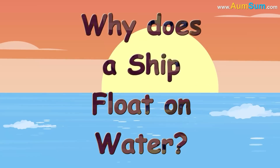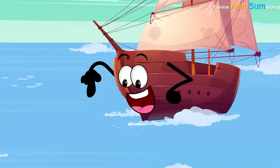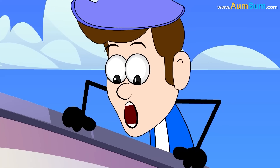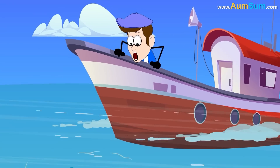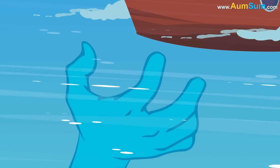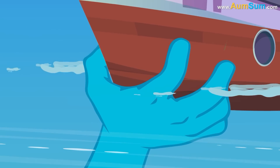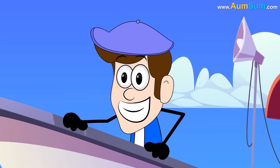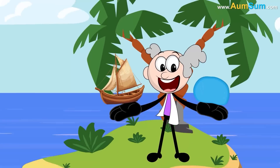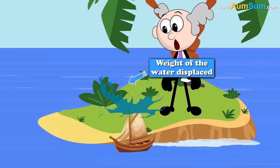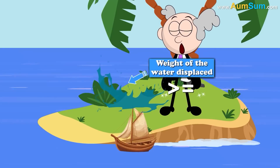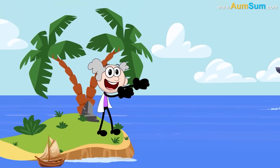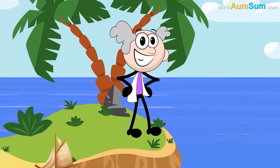Why does a ship float on water? A ship floats due to a principle known as buoyancy — the upward force exerted by a fluid that opposes the weight of an immersed object. Ships are designed to displace a volume of water equal to their weight. When the weight of the water displaced is equal to or greater than the weight of the ship, the ship floats. This principle allows even very large and heavy ships to stay afloat.